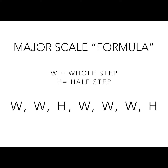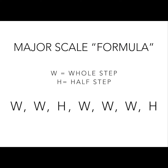So what is the major scale formula? W will stand for whole step and H will stand for half step. The formula is: whole step, whole step, half step, whole step, whole step, whole step, half step. So two whole steps followed by a half step, and then three whole steps followed by a half step. The first part has two whole steps then a half step; the second part has three whole steps and then a half step.